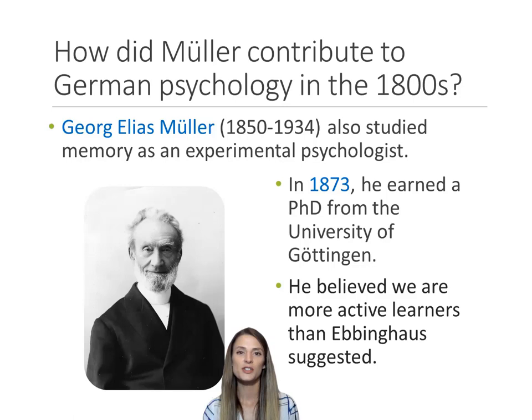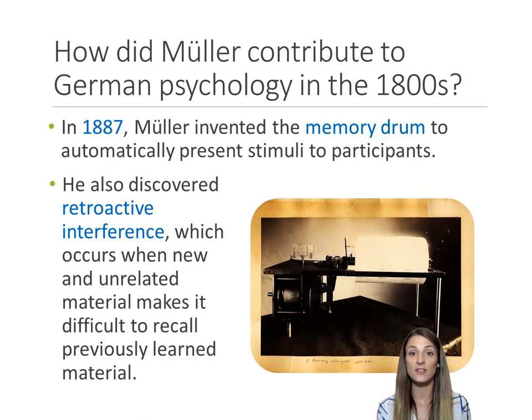Muller disagreed with Ebbinghaus about a few things. Muller took the stance that learning and memory require more active participation — that in order to learn, the human really has to make an effort and participate in the process. In order to support this idea, this deviation from Ebbinghaus, Muller did two major things that Ebbinghaus did not do.